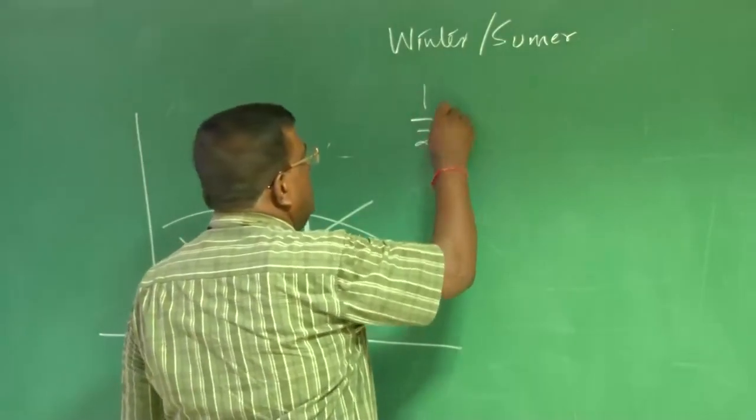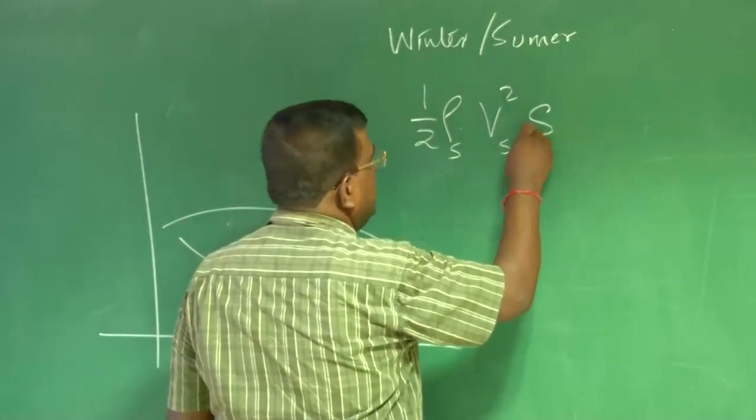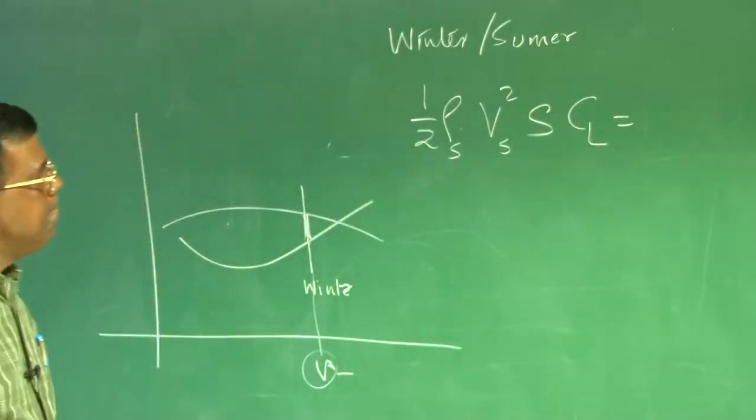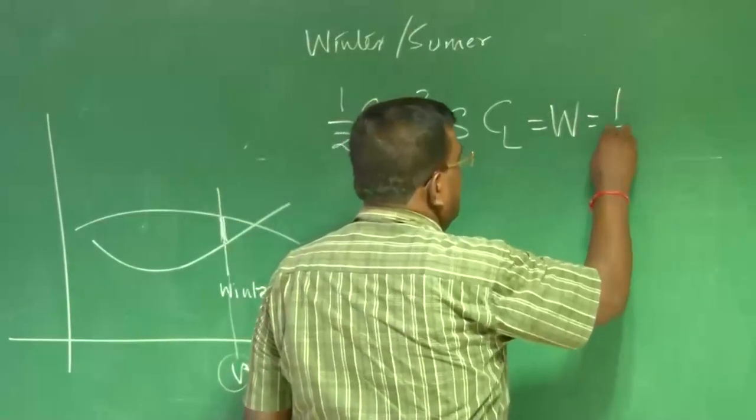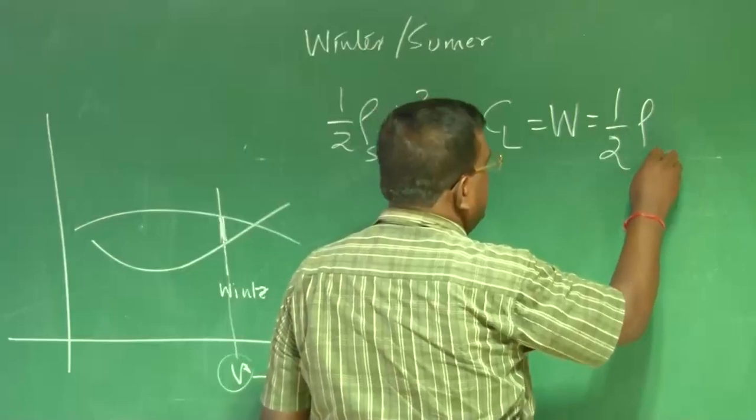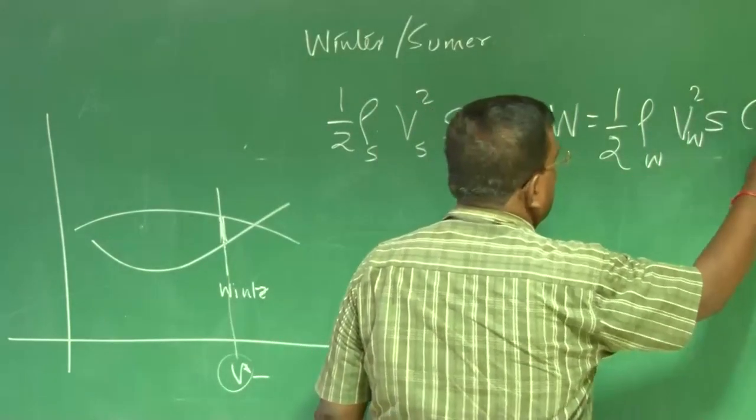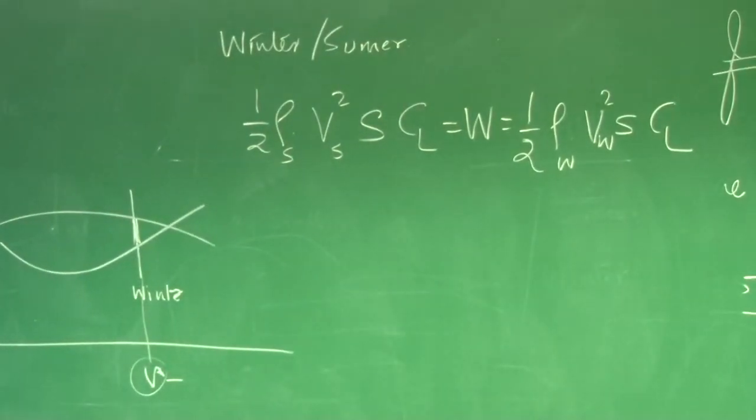So let us say, if I see a simple case of cruise, so half rho summer into V summer square into S into CL, I am flying at same CL, let us say. I am flying at same CL, I am having same areas, same weight, everything same.